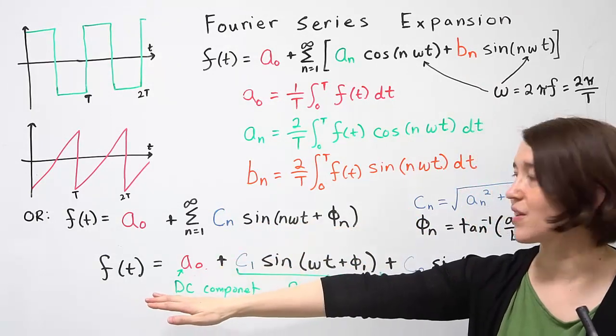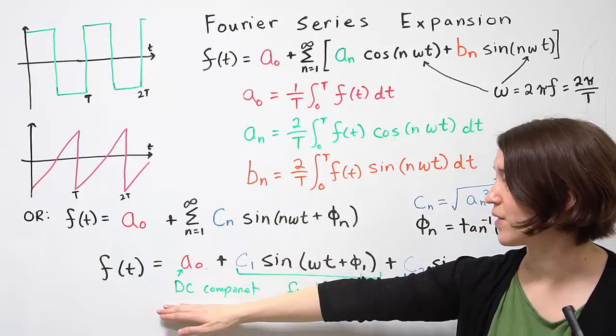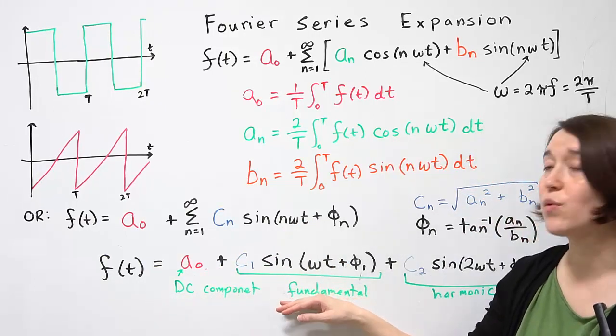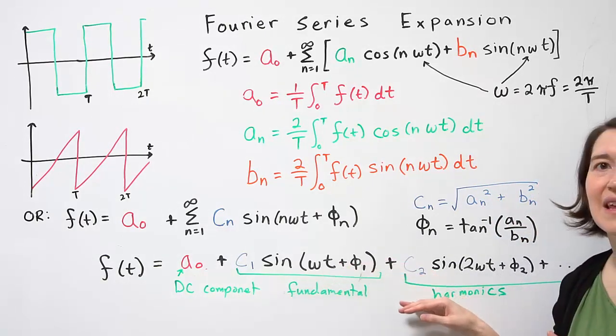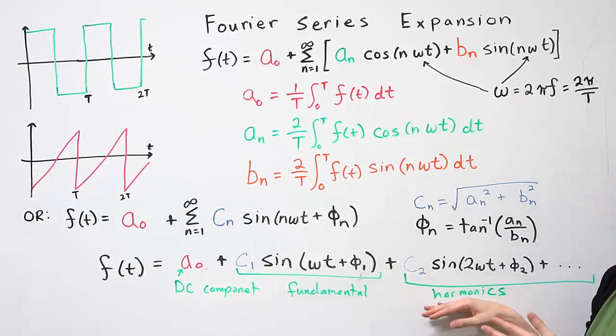When we break our signal down, we have the first component is the DC component. n equals 1 is the fundamental, and anything higher than that is considered harmonics.